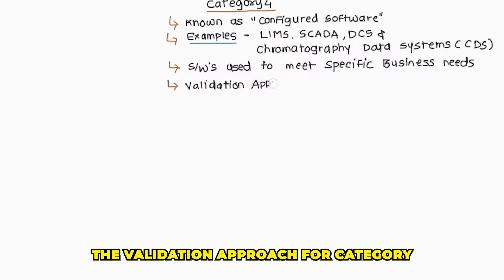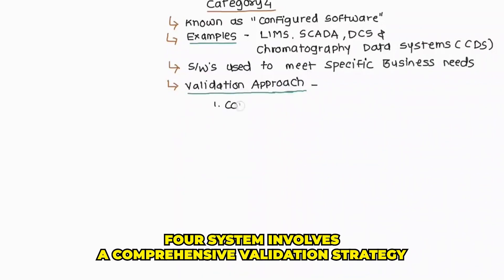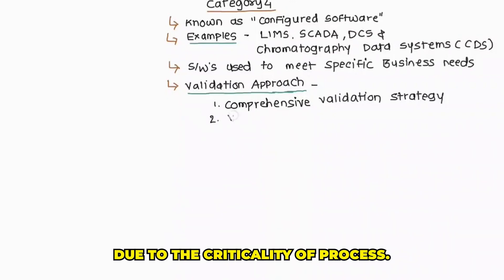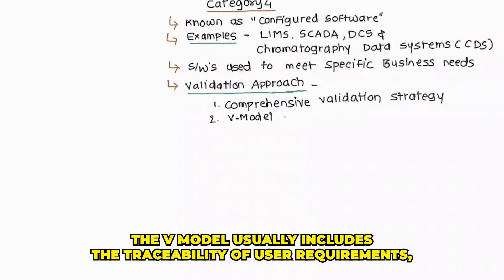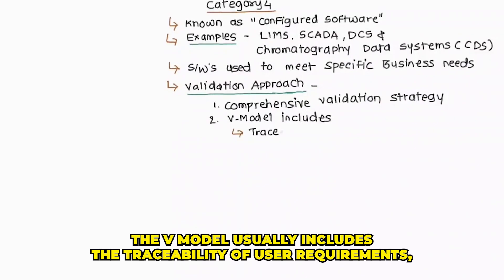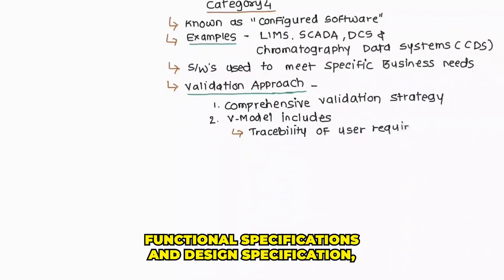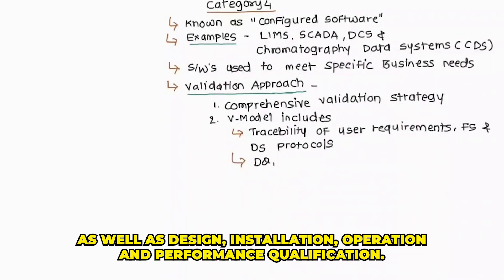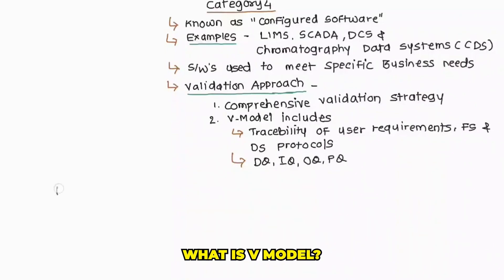The validation approach for category 4 systems involves a comprehensive validation strategy due to the criticality of processes they support. For this category, the V model usually includes the traceability of user requirements, functional specifications and design specifications, as well as design, installation, operation, and performance qualification. What is V model we will see in subsequent videos.